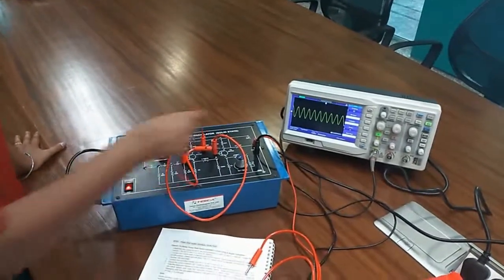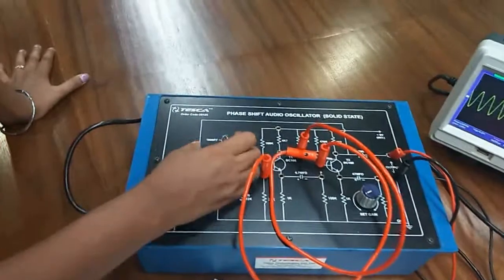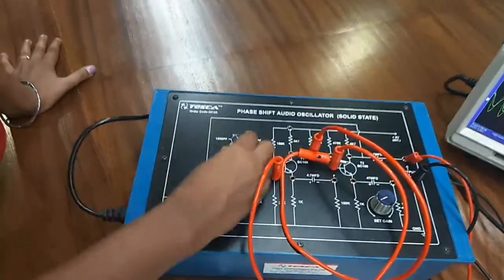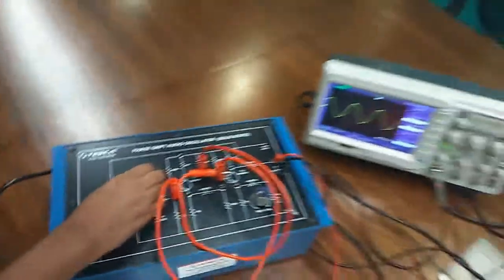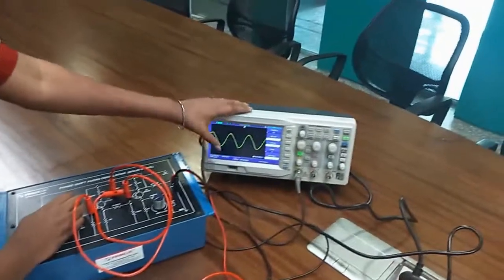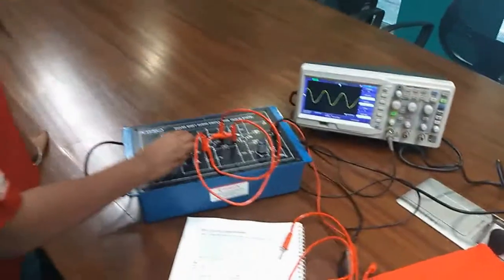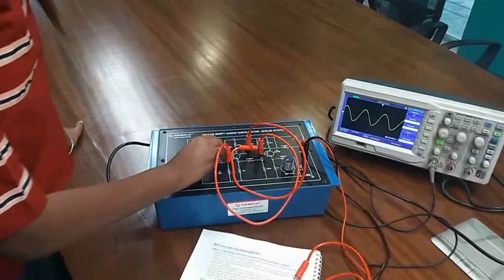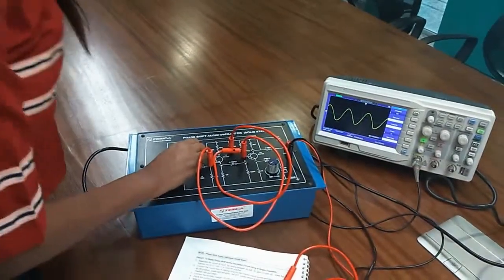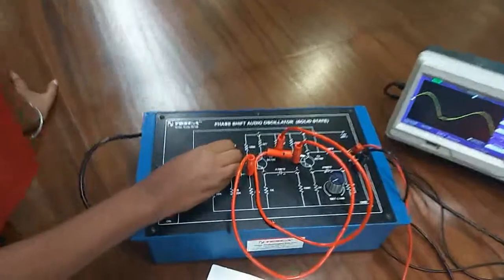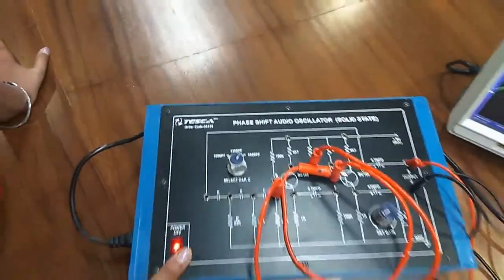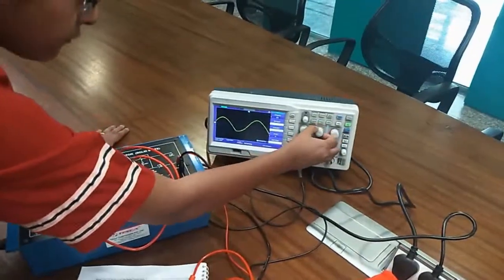Let's check the different capacitor diagram. I am changing this from 1000 to 3300. You can notice here the frequency is changed and you can note down the frequency here. I am now changing it to 6800 picofarad and you can see there is a change in the waveform.